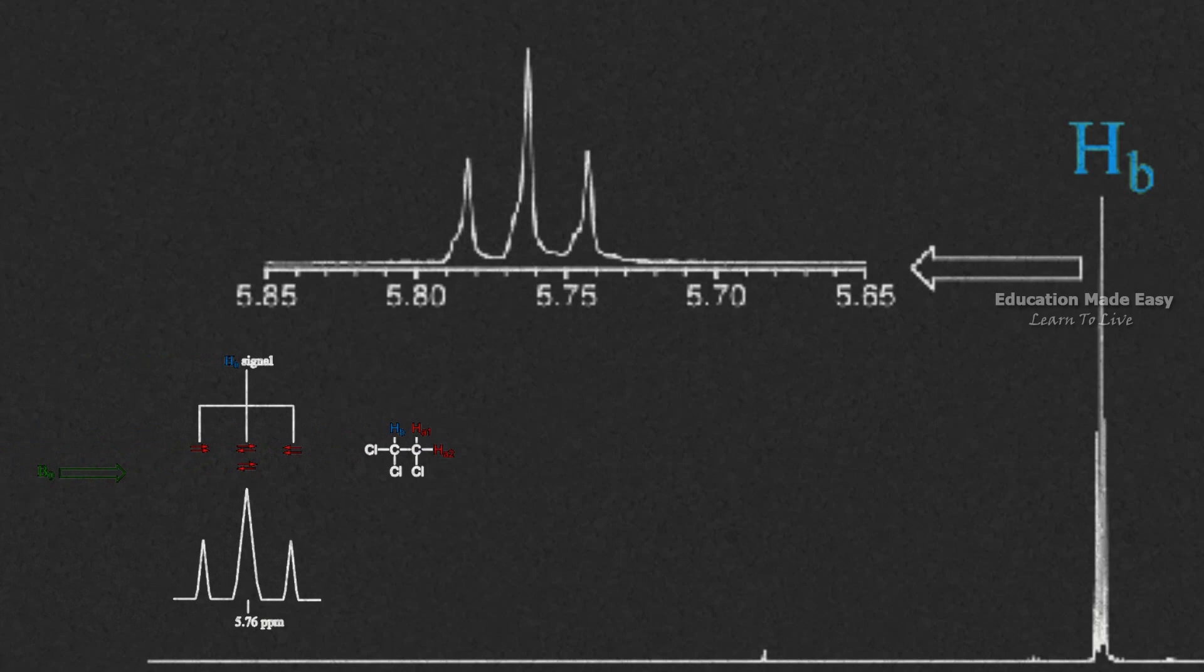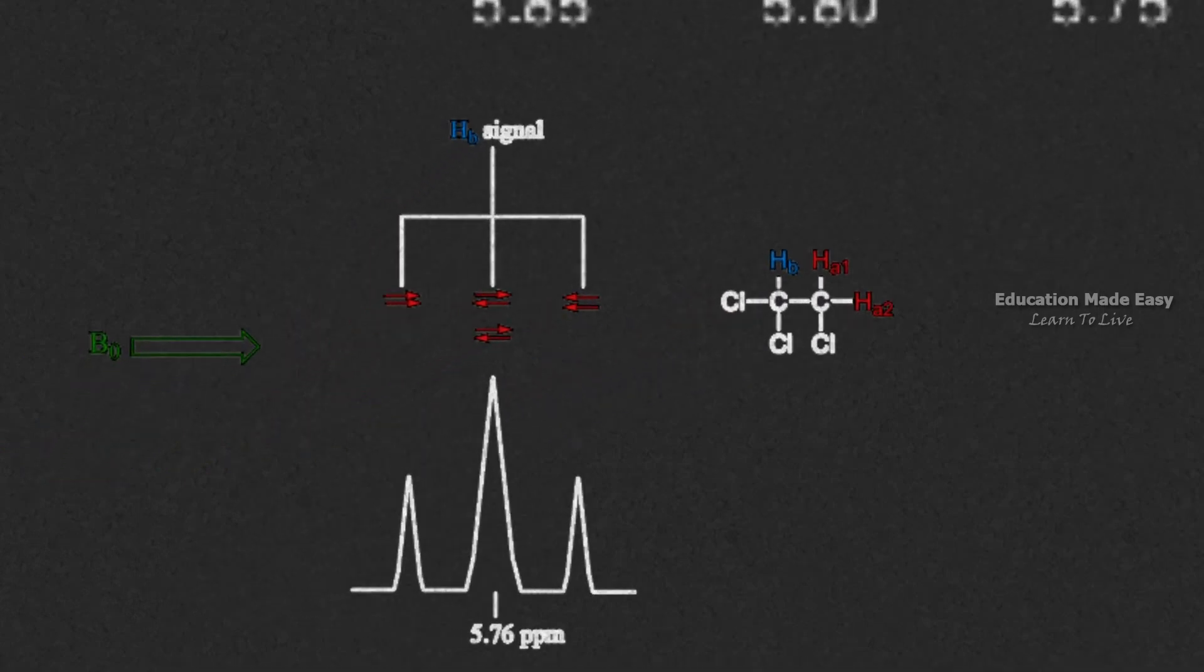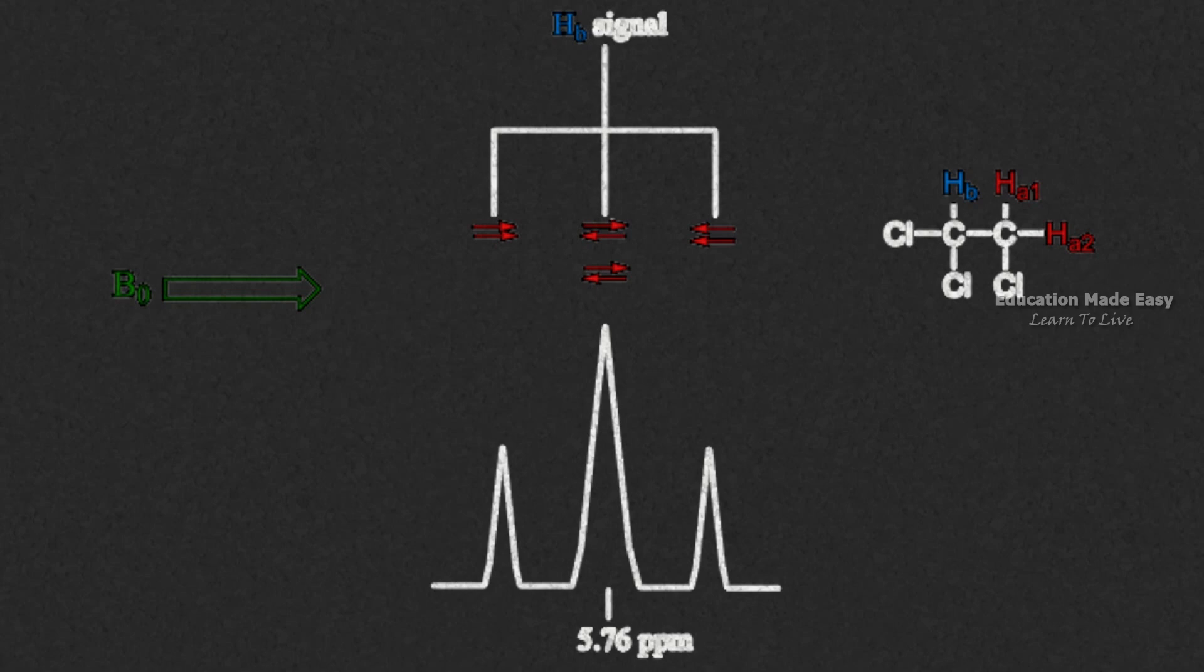The same thing happens for Ha signal. The Hb protons will interfere with the applied magnetic field, causing spin-spin coupling.